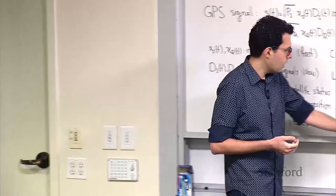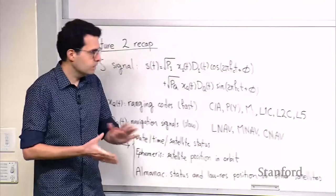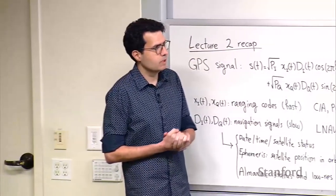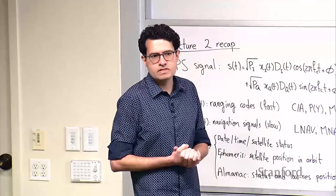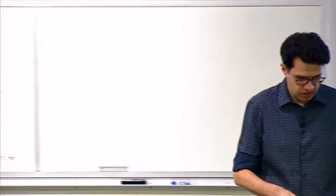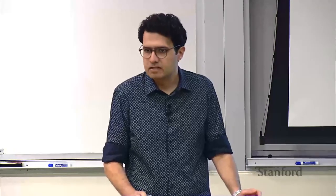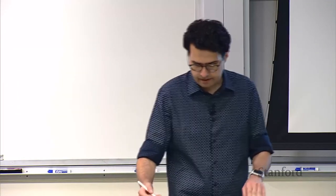Today the topic covers two things. One is satellite orbits and specifically how the ephemeris information is used to find the satellite location in orbit. Then we will talk about ranging codes and the mathematics behind them and how they are used to find time-of-flight information and then ranges.